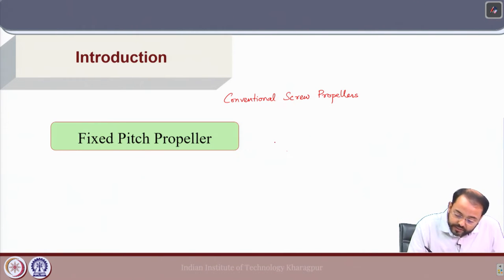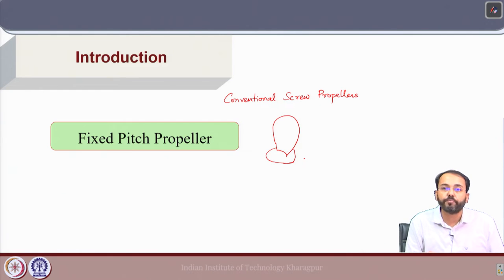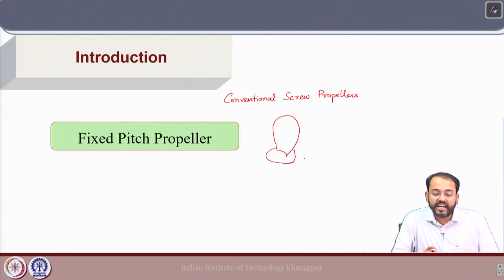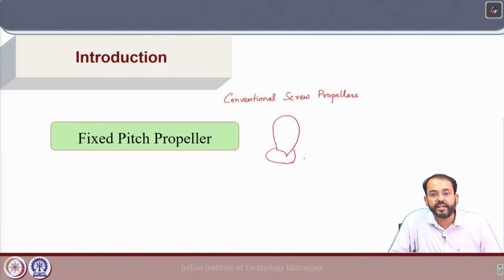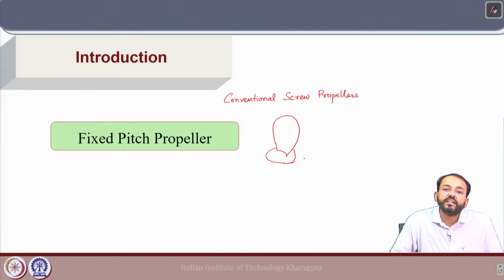If we draw a blade mounted on a hub for a fixed pitch propeller, the blade is directly connected to the hub as an integral structure. We will have multiple blades depending on the blade number. For fixed pitch propellers, we vary the RPM of the propeller to change the speed of the ship.